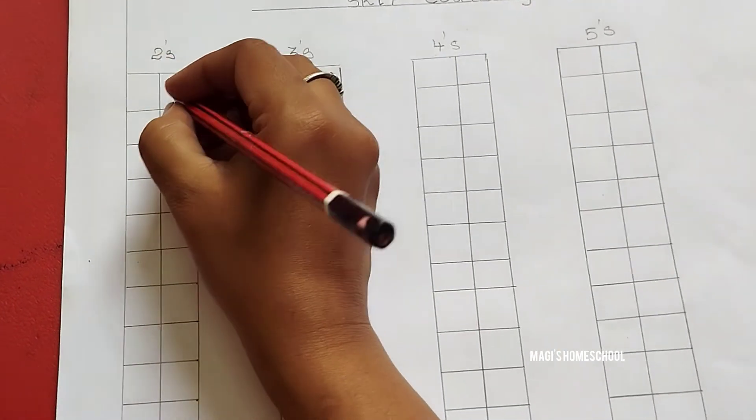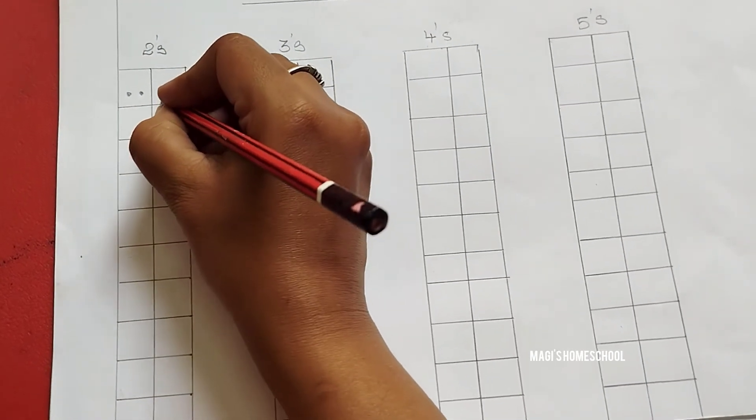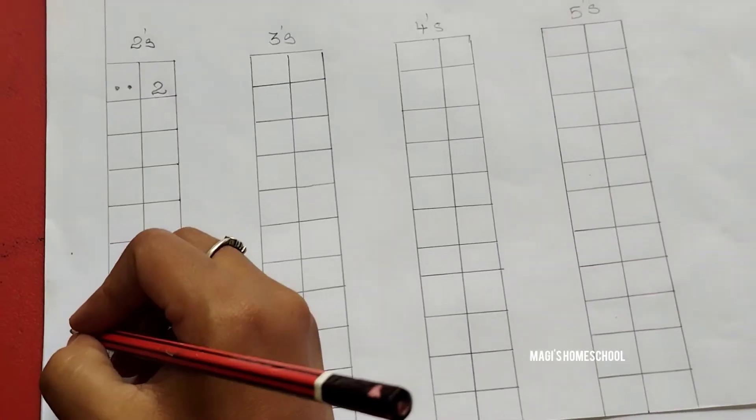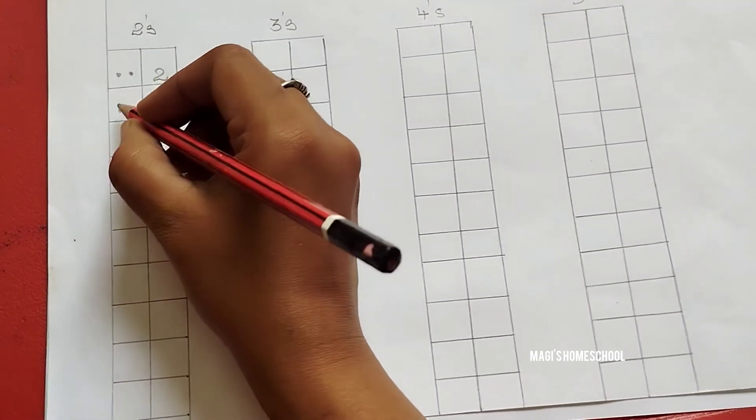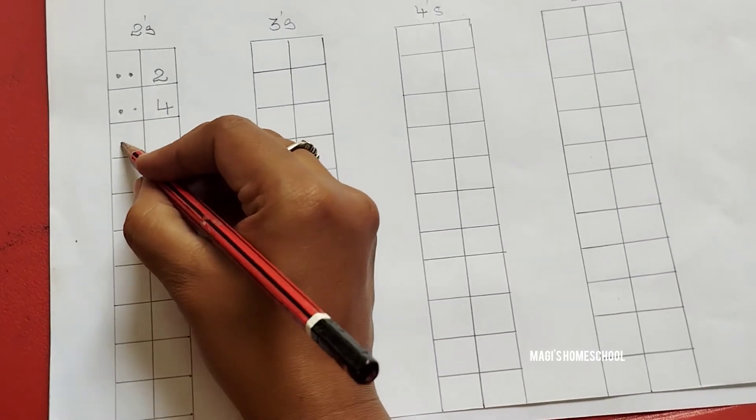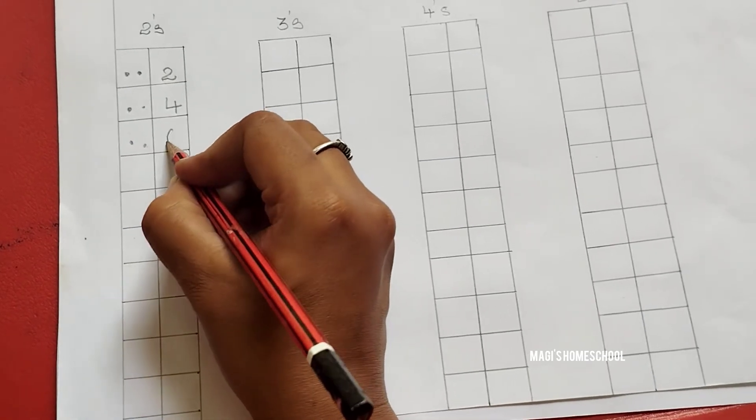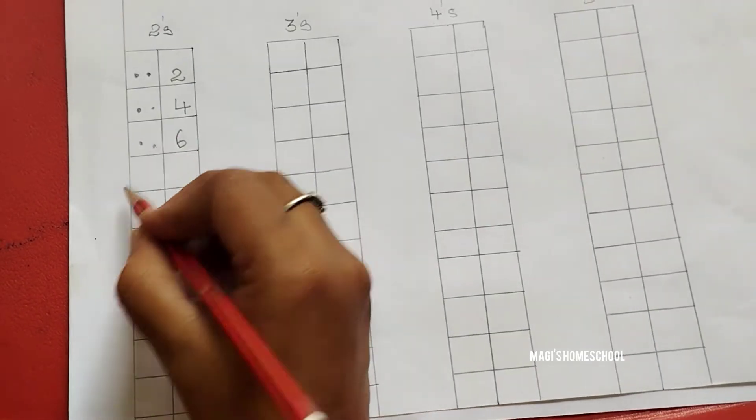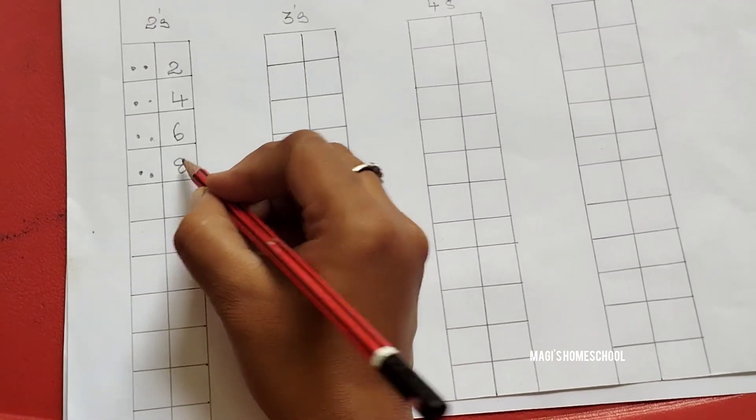Here you are going to add 2 to the previous number. 1, 2. Then after 2, 3, 4. Now you are going to write 4. After 4, 5, 6. Now you are going to write 6.